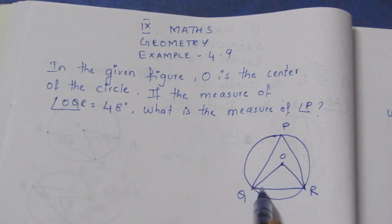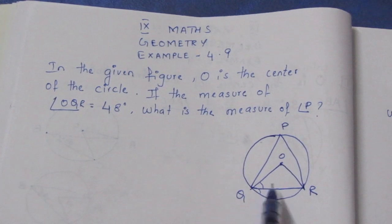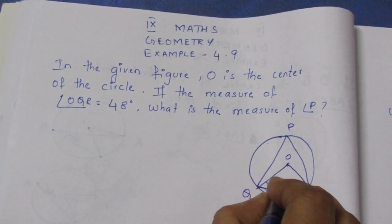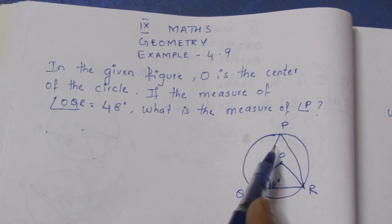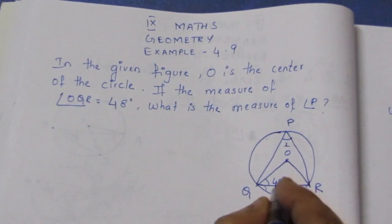Angle OQR, I will tell you, angle OQR is 48 degrees. What is the measure of angle LP? What is the angle? 48 degrees.